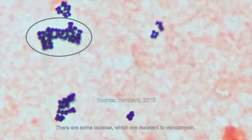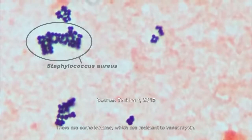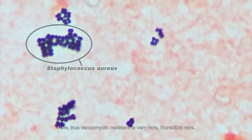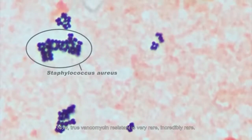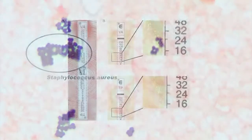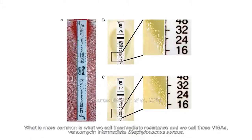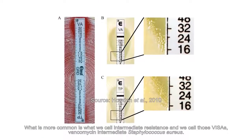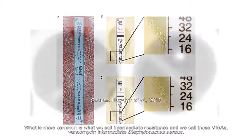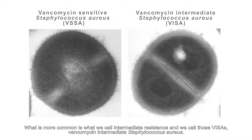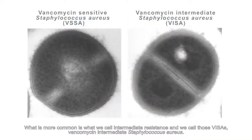If it is MRSA, we continue with vancomycin because that is perhaps the best drug we have. There are some isolates which are resistant to vancomycin. True vancomycin resistance is very rare — incredibly rare. What is more common is what we call intermediate resistance. We call those VISAs — Vancomycin Intermediate Staphylococcus aureus. So you may come across clinicians choosing to use an alternative drug.